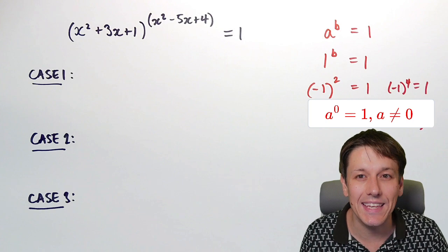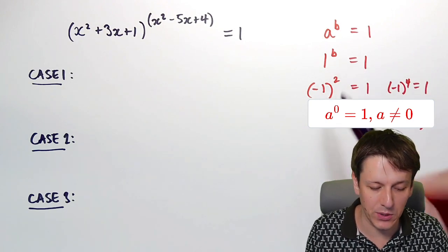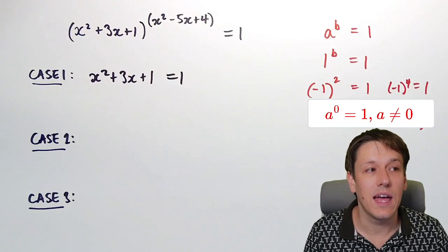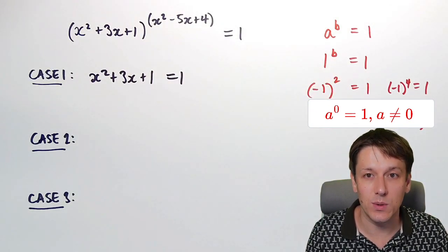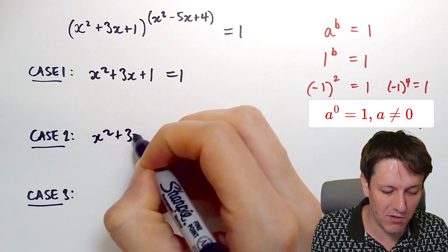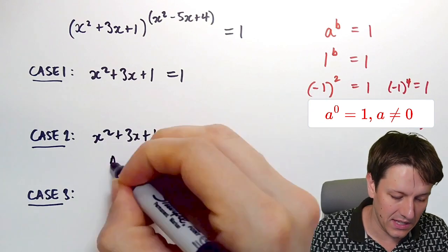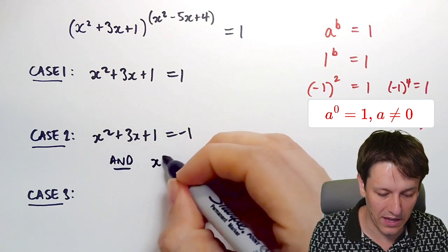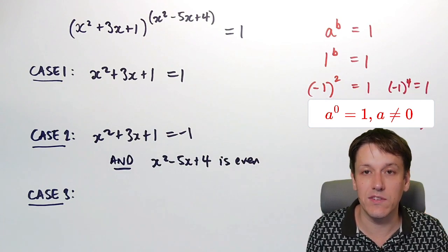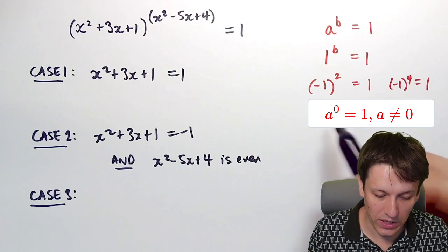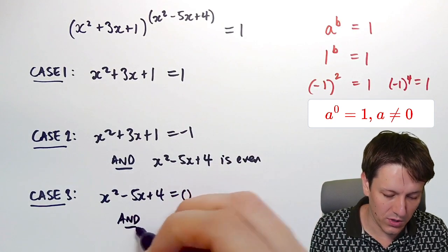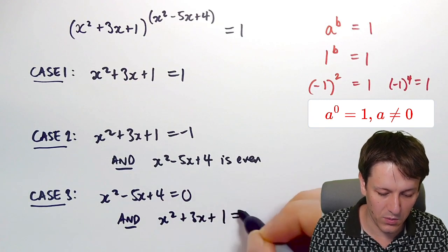So for our original problem, we've got three cases to consider. First case: solve x squared plus 3x plus 1 equals 1 — it doesn't matter what the power is, we know it will work. Second case: x squared plus 3x plus 1 equals minus 1, but we must also check that x squared minus 5x plus 4 is an even number. Third case: x squared minus 5x plus 4 equals 0, with the check that x squared plus 3x plus 1 is not equal to 0.